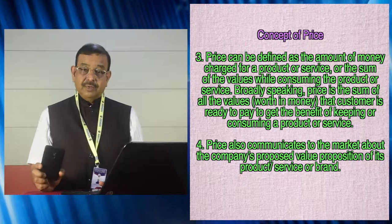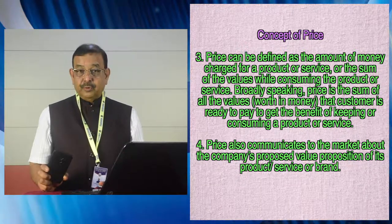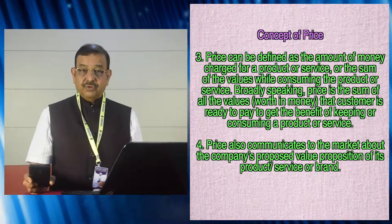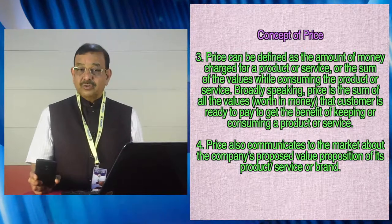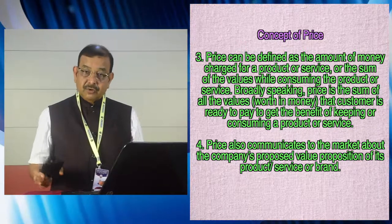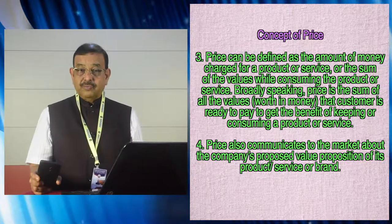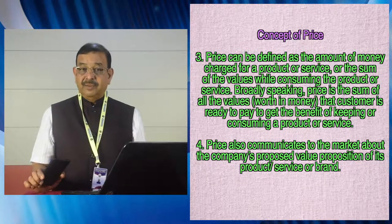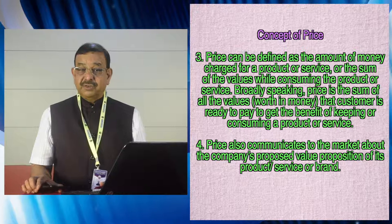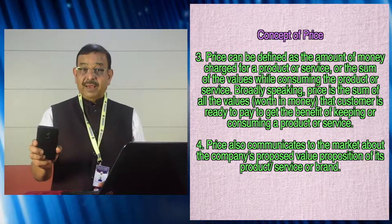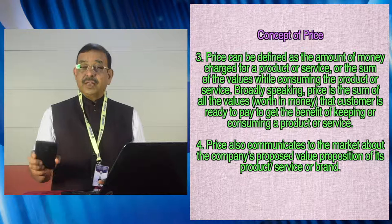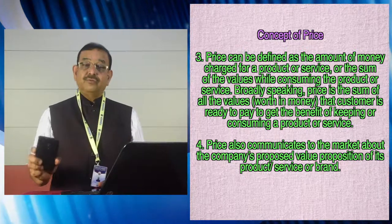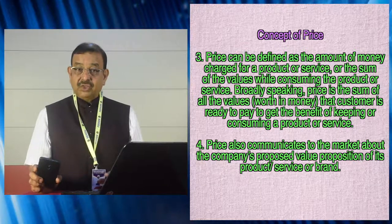Broadly speaking, price is a sum of all values involved in obtaining a particular product. For instance, a product priced at ₹12,000 can be bought online, or you could go to a market like Pant Bazaar — searching different shops involves time cost, money cost, energy cost, and psychic cost. Psychic cost refers to the dissonance or dissatisfaction one might feel after a purchase. However, if it is a trusted brand like Nokia, that psychic cost is minimized because the consumer already has confidence in the product quality.